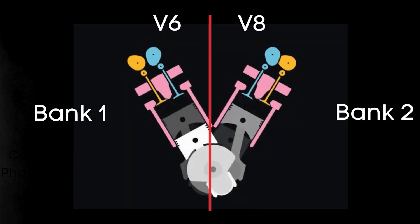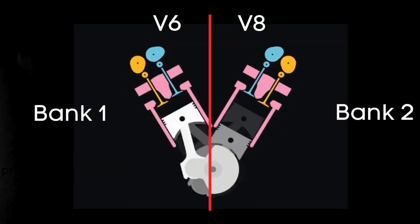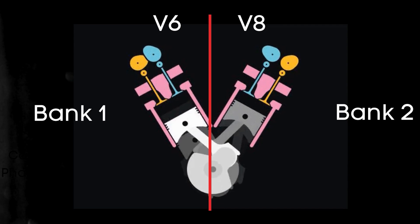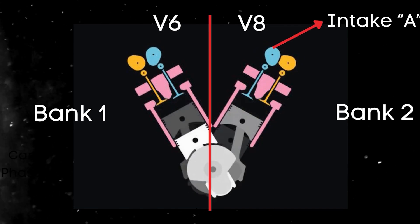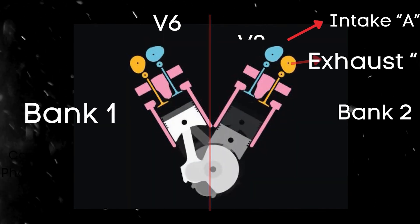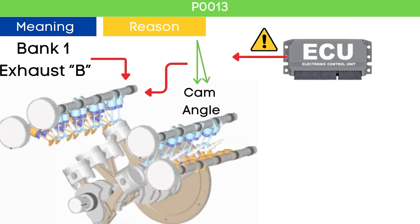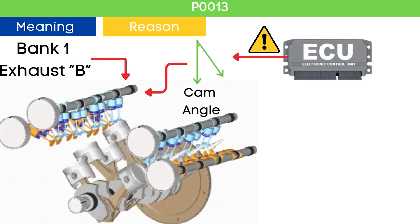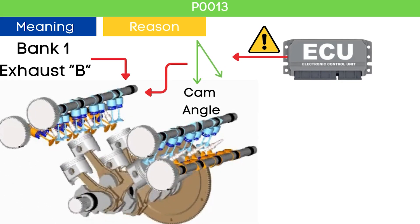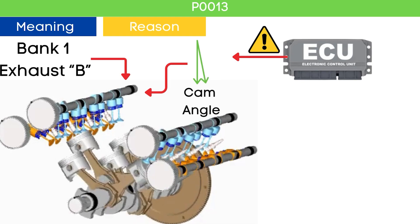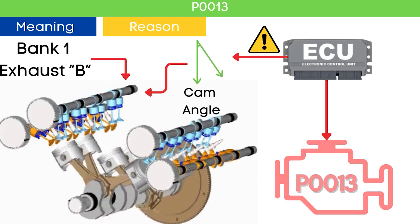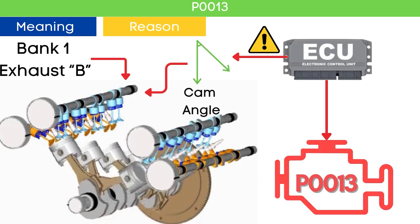For dual overhead camshaft DOHC engines, there are two camshafts per bank — intake and exhaust. When the ECU detects that the Bank 1 exhaust camshaft position is not reaching the targeted cam angle, it triggers OBD-II code P0013.